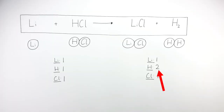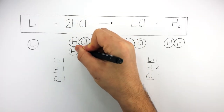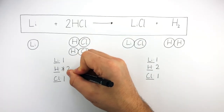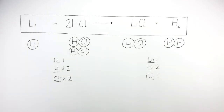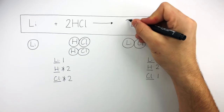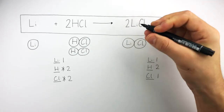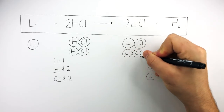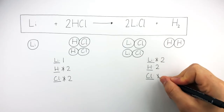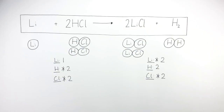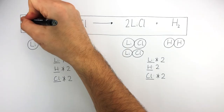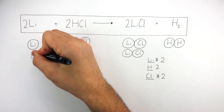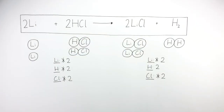We can see there are two hydrogen atoms on the right and one hydrogen atom on the left, so we put a big two in front of the HCl. This multiplies the number of hydrogen chloride molecules by two, so there are now two hydrogen atoms and two chlorine atoms on the left. We can see there are two chlorine atoms on the left and one chlorine atom on the right, so we put a big two in front of the LiCl, which multiplies the number of compounds by two, giving two lithium chloride compounds — meaning two lithium atoms and two chlorine atoms on the right. There is now one lithium atom on the left, so we put a big two in front of the Li, giving two lithium atoms on the left. The equation is now balanced.